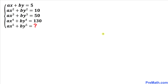Welcome to pre-math. In this video we have this system of equations: ax + by = 5, ax² + by² = 10, ax³ + by³ = 50, ax⁴ + by⁴ = 130, and we are going to find the value of ax⁵ + by⁵.